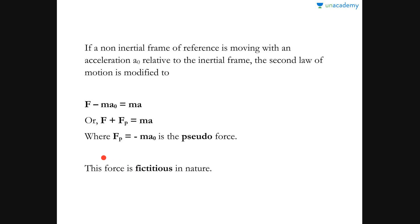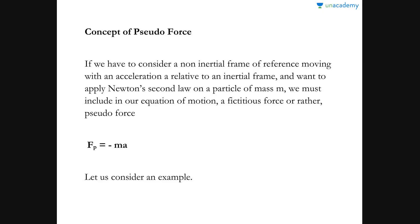We can rewrite this as F + Fp = ma, where Fp = −ma₀, which is called the pseudo force. 'Pseudo' basically means false, imaginary, or fictitious, so this force is fictitious in nature. One important characteristic: the pseudo force is always opposite to the direction of the acceleration of the frame of reference. So if the frame accelerates in a particular direction, the fictitious force acts in the opposite direction.